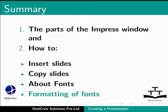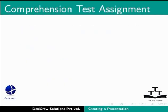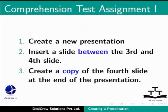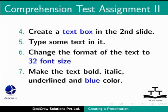Try this comprehension test assignment. Create a new presentation. Insert a slide between the third and fourth slide. Create a copy of the fourth slide at the end of the presentation. Create a text box in the second slide and type some text in it. Change the format of the text to 32 font size. Make the text bold, italic, underlined and blue in color.